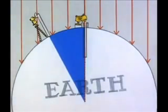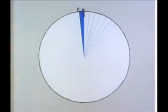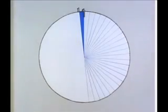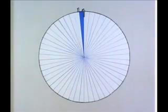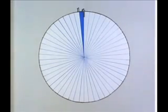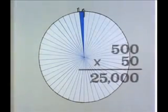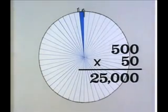If the angle was 1/50th of a circle, then the distance around the world must be 50 times the distance from Alexandria to Cyene. With these simple tools, Eratosthenes made this almost exact measurement of the world more than 1,700 years before Magellan sailed around it.